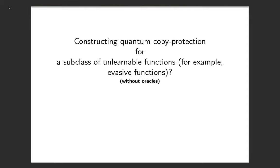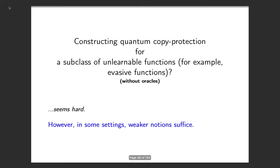We ruled out copy protection for all unlearnable functions, and the same impossibility can rule out finite-term SSL as well. So we ask: can we construct copy protection for a subclass of unlearnable functions, such as evasive functions? In some settings, we do not need the strongest notion of copy protection — we can settle for a weaker notion, which is what we will do.